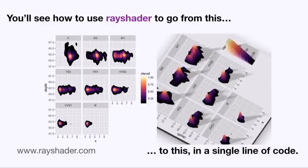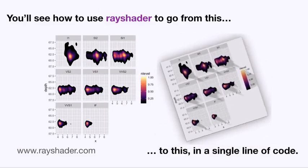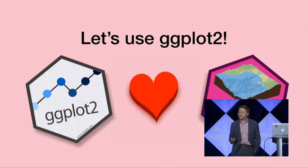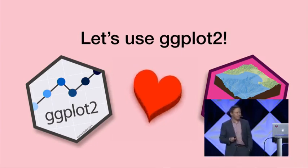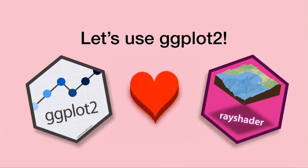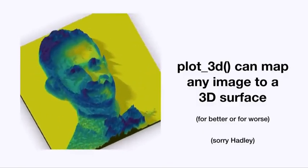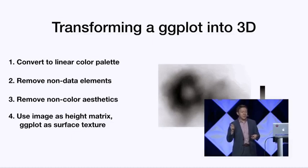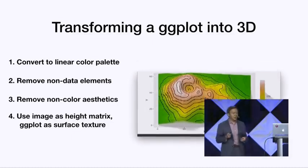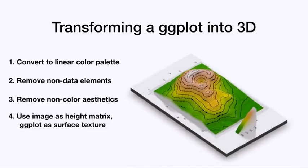With ggplots and rayshader, you'll know how to create beautiful 3D ggplots. If ggplot2 is a 2D plotting library, is there a ggplot3? The x and y aesthetics are built into ggplot. We can extract a matrix of height values from our ggplot by swapping the palette to grayscale black and white, then drop this into plot 3D along with the ggplot texture — and now we have our 3D ggplot.